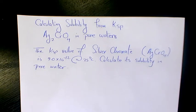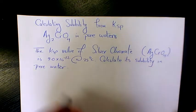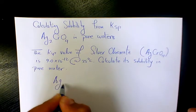What's up guys, this is Massey. Welcome to another video. In this video I want to show you how to find out the solubility of silver chromate Ag2CrO4 in pure water. The Ksp value for silver chromate is 9.0 times 10 to the power of negative 12 at 25 degrees. So whenever we have silver chromate...